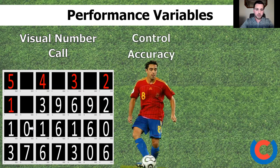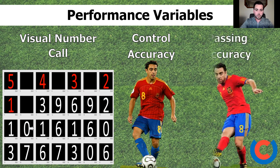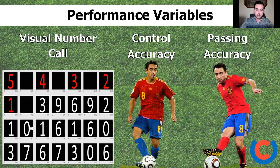The next performance variable was control accuracy — identifying if participants could control the ball with one touch before passing it with their second. If they took more than one touch, or missed the football entirely, it was counted as a control error. Then we had passing accuracy, which meant selecting the correct pass to the right goal and making the pass go between the two goals.